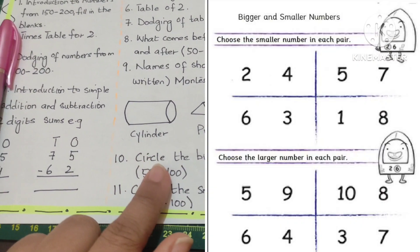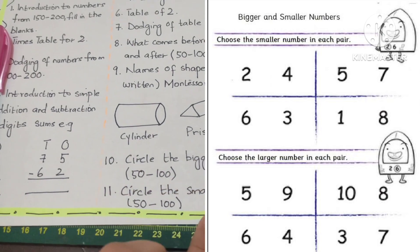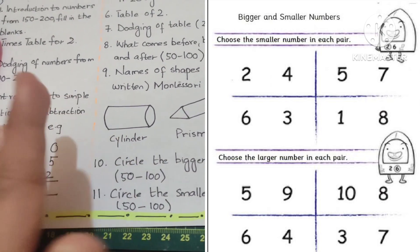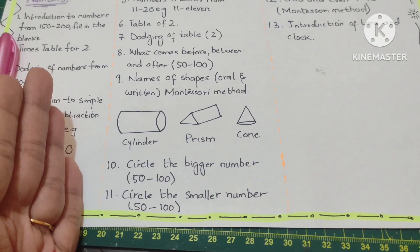Next is circle the bigger number and circle the smaller number so a child can know how much each number's quantity carries.